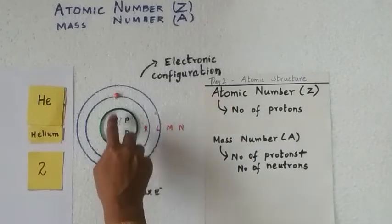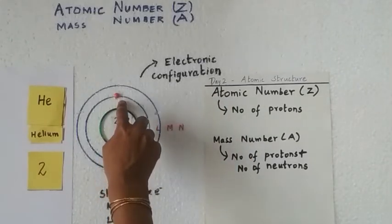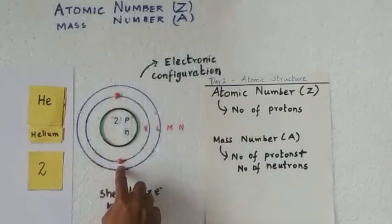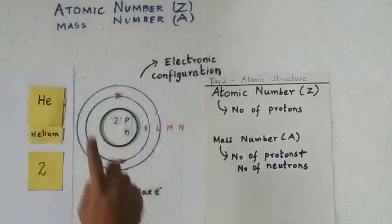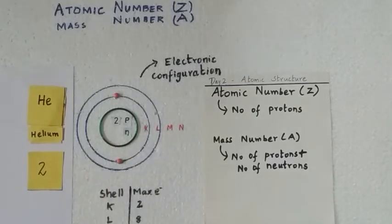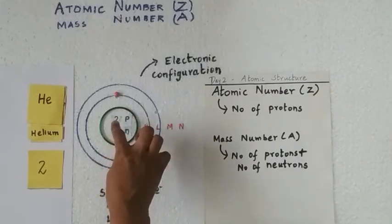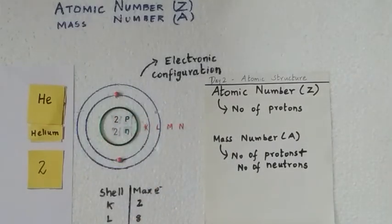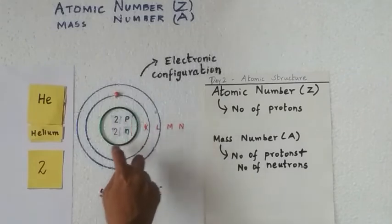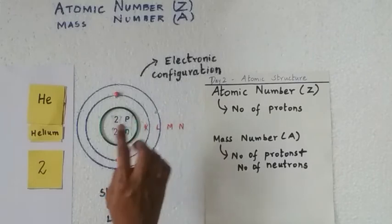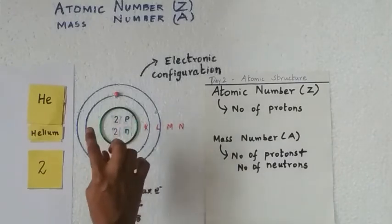The atomic number is the number of protons. Since helium has 2 protons, the atomic number Z is 2, and it also has 2 electrons. Helium also has 2 neutrons. So the mass number is the number of protons plus the number of neutrons: 2 plus 2 equals 4. The mass number of helium is 4.